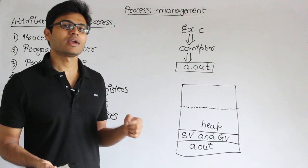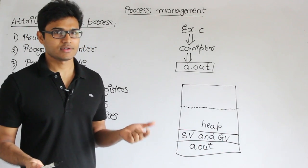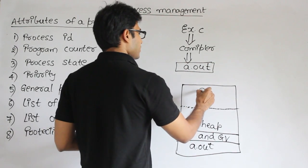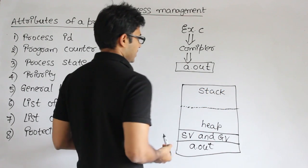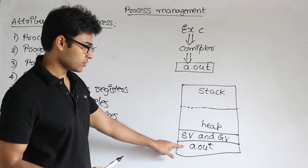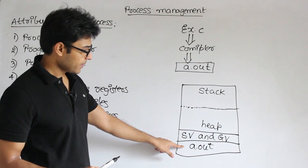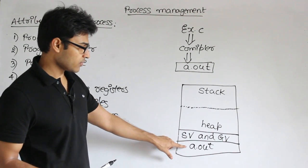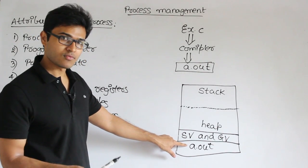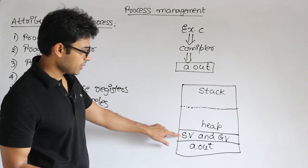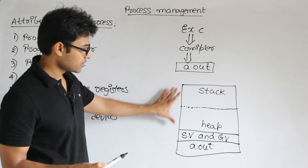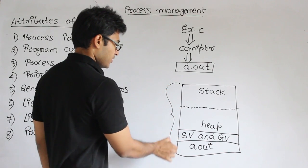Every process is also supposed to contain something called a stack. The advantage of stack is for recursion calls — for function calling we need a stack, therefore it will be there; it is also called the function stack. So stack will be there, heap will be there, static variables, global variables, and then the executable code. The CPU will take one by one the lines in the executable code and keep executing them, referring to the static variables present in the same process — this entire thing is called process boundaries.